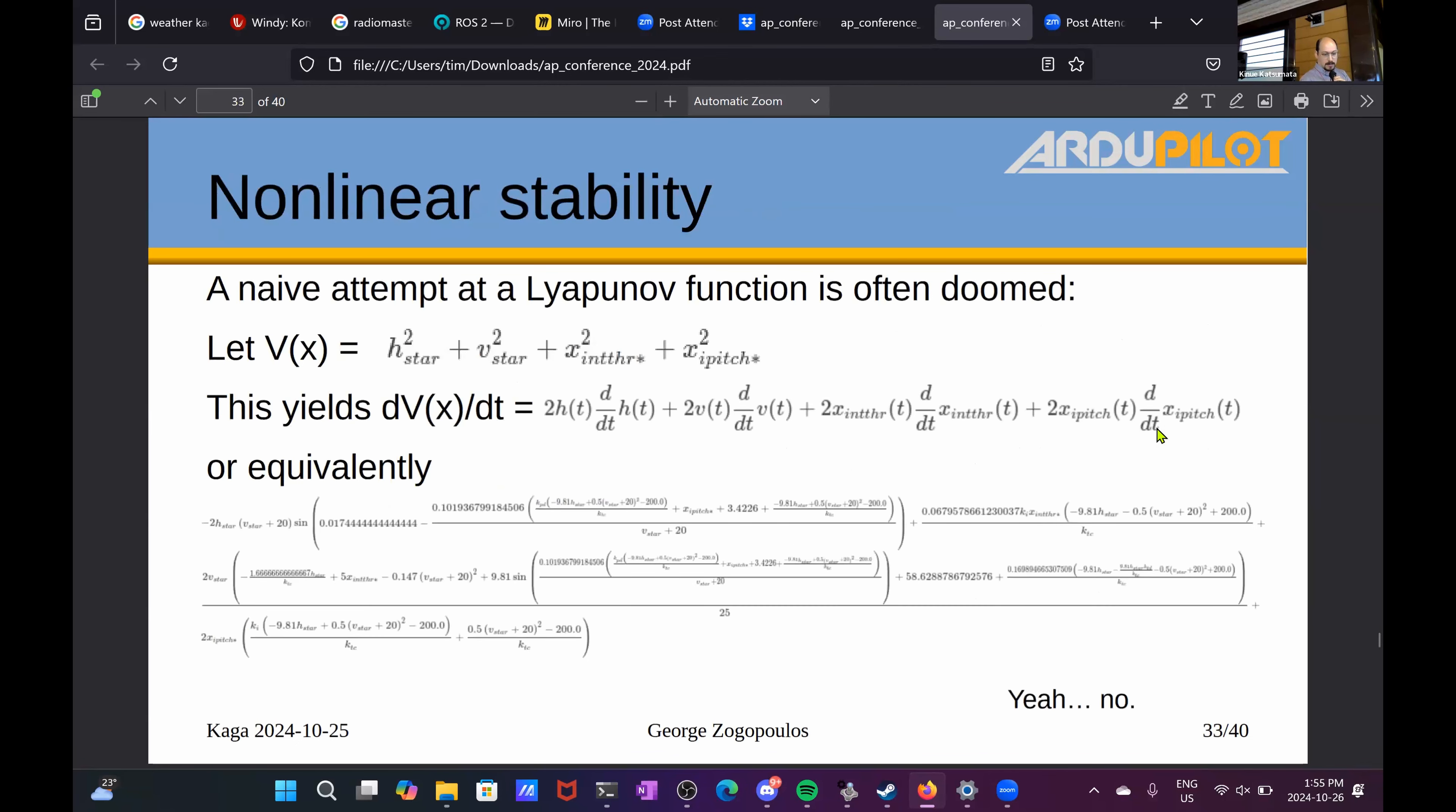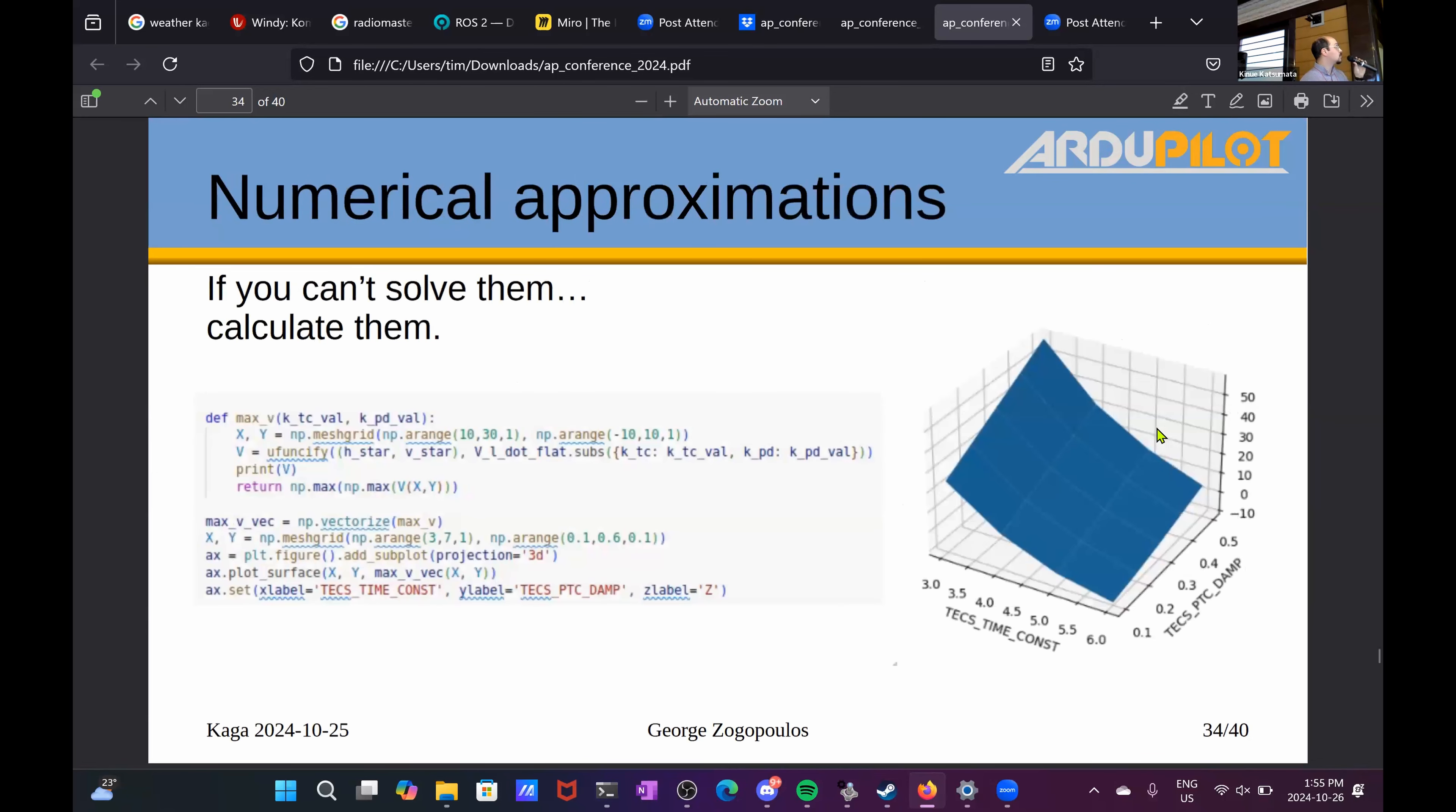And if that's positive, and for some cases it is, like we see here, it means that our system oscillates or escapes basically and drives away from the origin. Whereas for some values of the time constant of the pitch damping, it is negative everywhere. The maximum value is negative, so everything is definitely negative. And this means that that system in comparison is more stable. It gets to the origin for sure and probably faster.